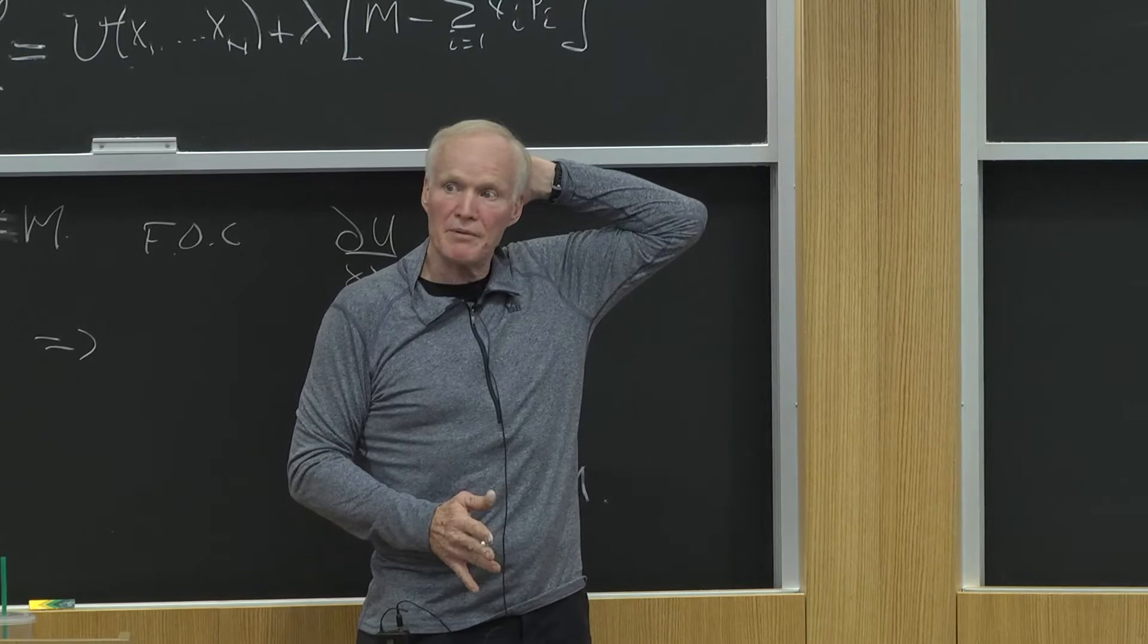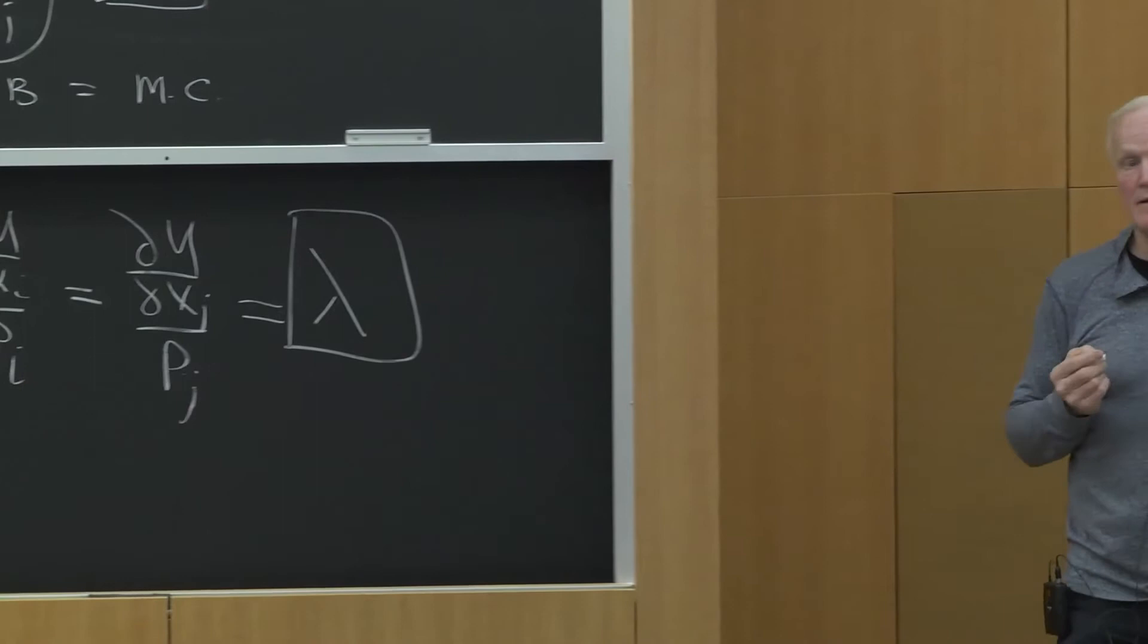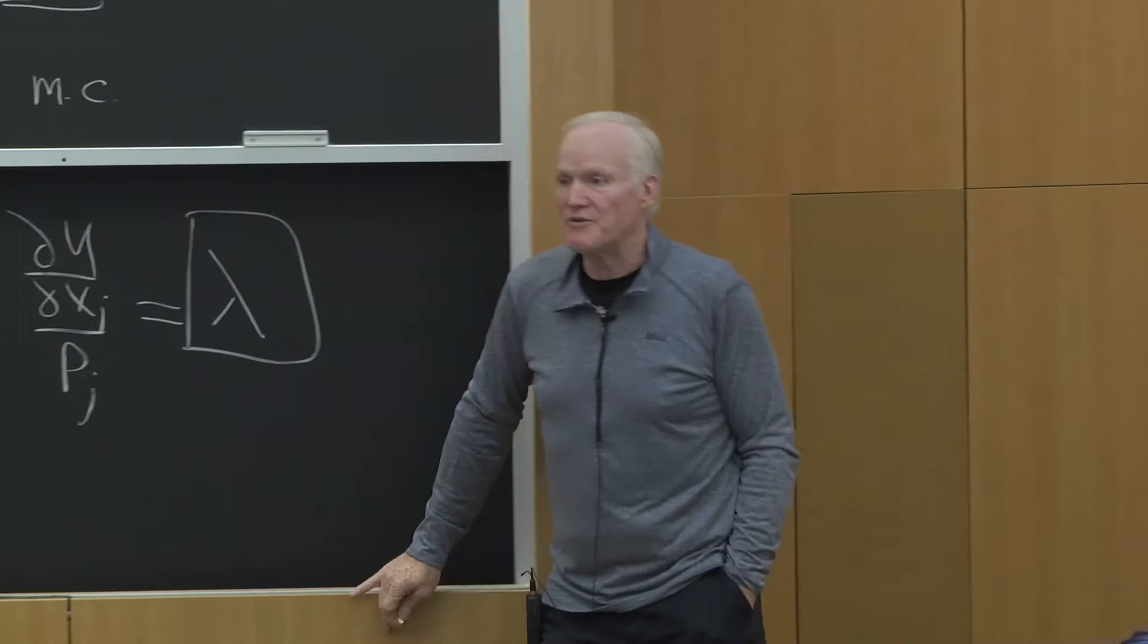But it also says, I now have an interpretation of lambda. What is lambda? What is this multiplier going to turn out to be? I solve this Lagrangian and I get the equilibrium value of lambda.